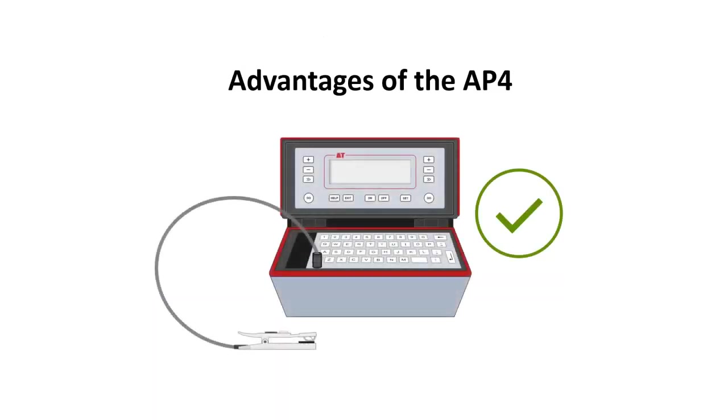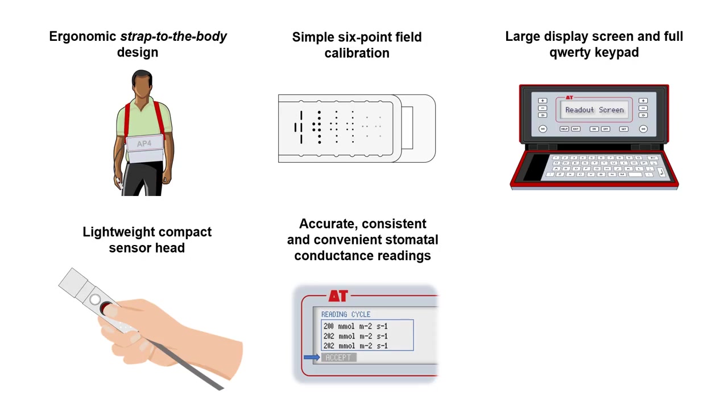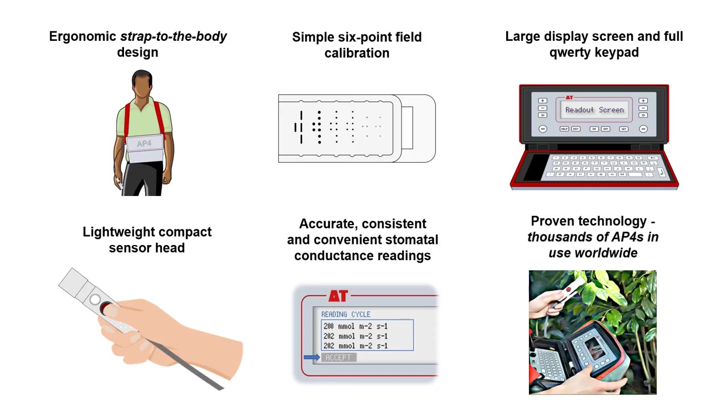Let's review the main advantages of the AP4. Ergonomic strap-to-the-body design, freeing up hands for leaf positioning and sensor head operation. Simple six-point field calibration, so you can be sure of best accuracy. Large display screen and full QWERTY keypad for clarity of information and easy annotation of readings. Lightweight, compact sensor head, making it easy to get amongst foliage and take precise measurements. Accurate, consistent, and convenient stomatal conductance readings, giving you fuss-free measurement data you can trust. And proven technology, with thousands of AP4s in use worldwide, so you can be confident you are using a tried and trusted instrument.